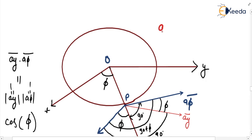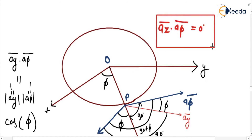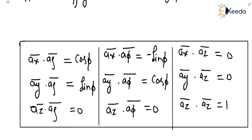A_z dot a_phi equals 0 because these two vectors are perpendicular to each other. So the complete table is: a_x dot a_rho equals cos phi, a_y dot a_rho equals sin phi, a_z dot a_rho equals 0; a_x dot a_phi equals negative sin phi, a_y dot a_phi equals cos phi, a_z dot a_phi equals 0; a_x dot a_z equals 0, a_y dot a_z equals 0, and a_z dot a_z equals 1. We need to remember this table.